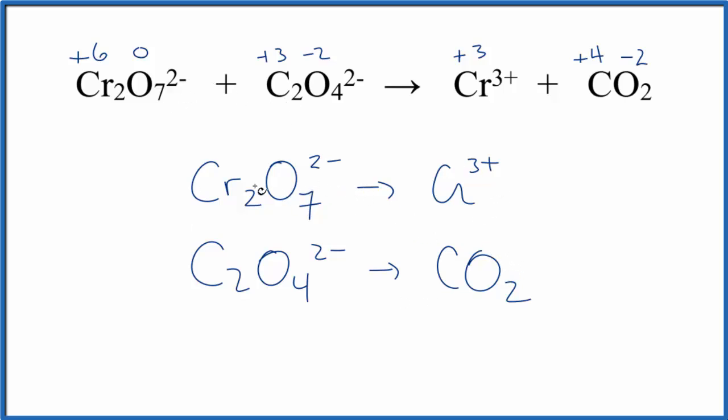We look at it. We went for the chromium from a +6 to a +3 on each chromium atom. Because of that, this number has been reduced. This would be the reduction half reaction.